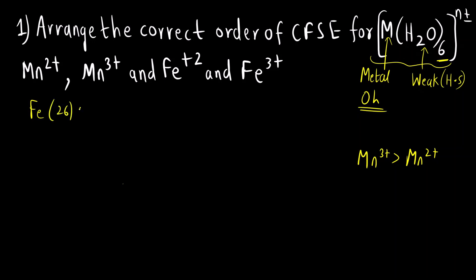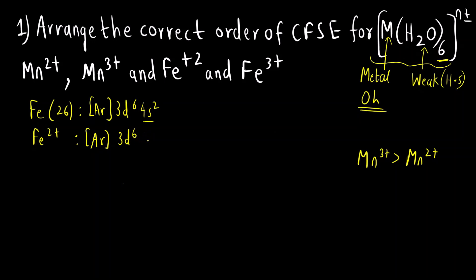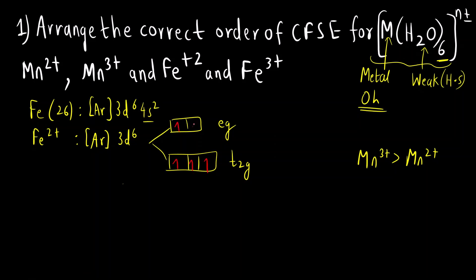Iron has atomic number 26, so its configuration is [Ar] 3D6 4S2. Fe²⁺ is [Ar] 3D6. In the octahedral T2G and EG levels we fill six electrons: T2G gets five and EG gets two. CFSE = 5×(-0.4) + 2×(0.6) = -2.0 + 1.2 = -0.8Δ₀.